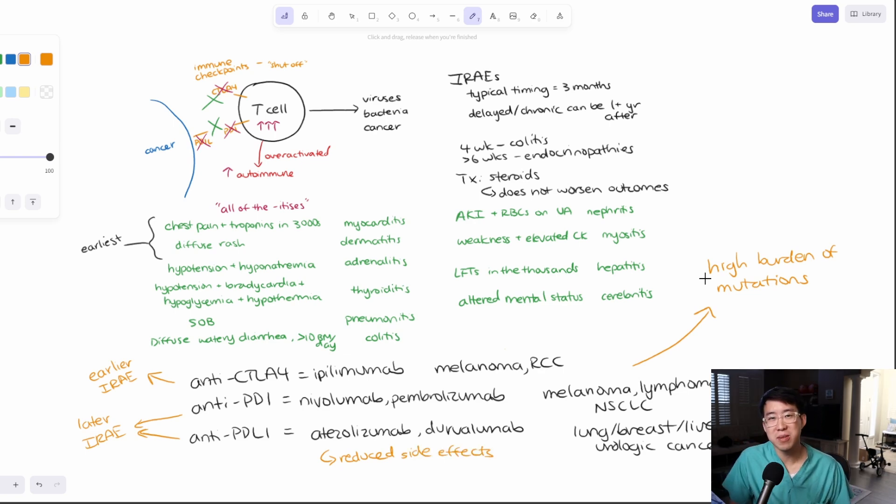I hope this was a quick and useful explanation for what immune checkpoint inhibitors are and how they work, and also some of the main side effects to look out for, which is basically all of the itises of any organ. Let me know in the comments if this was helpful. Thanks again for watching, and I'll see you in the next one. Peace!